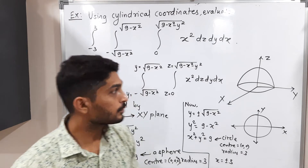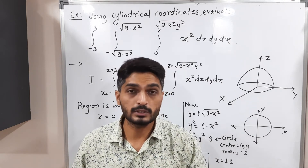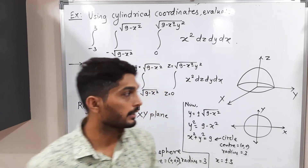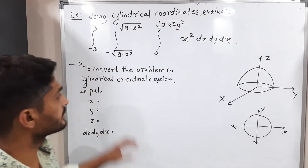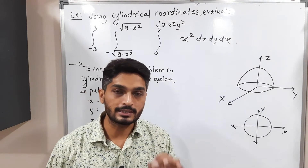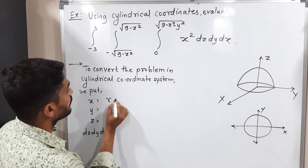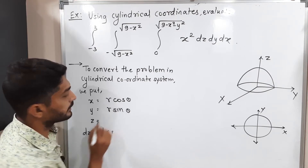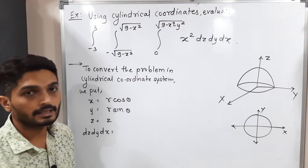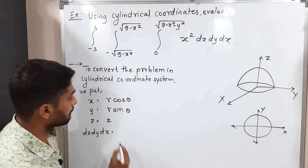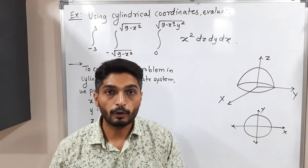Now we convert the problem to cylindrical polar coordinates using the substitutions: x = r cosθ, y = r sinθ, z = z. These are fixed standard substitutions. The volume element dz dy dx becomes r dz dr dθ.